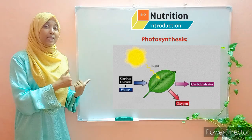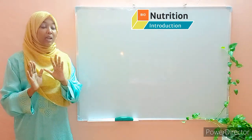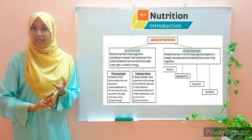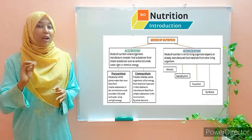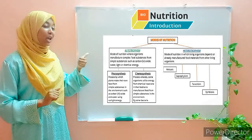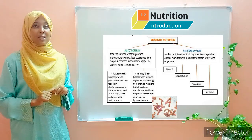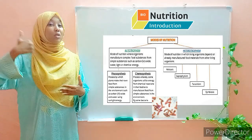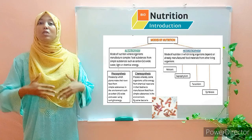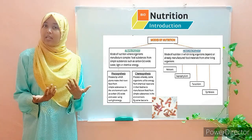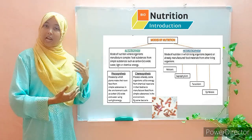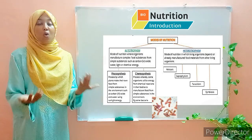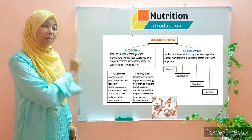Photosynthesis is seen in green plants and algae. Now bacteria are not capable of carrying out photosynthesis but they still manage to manufacture their own food through chemosynthesis. Bacteria have the ability to manufacture their own food but instead of using light energy as with plants, they use chemical energy obtained from chemical reactions. They carry out certain chemical reactions which produce energy, and then use this energy to manufacture their own food. This process is known as chemosynthesis.